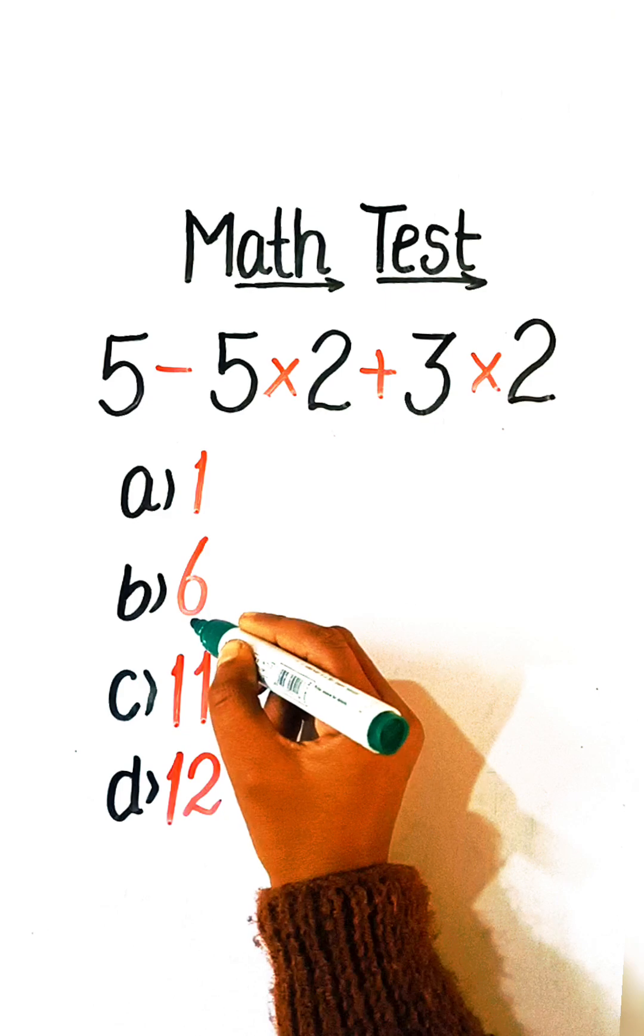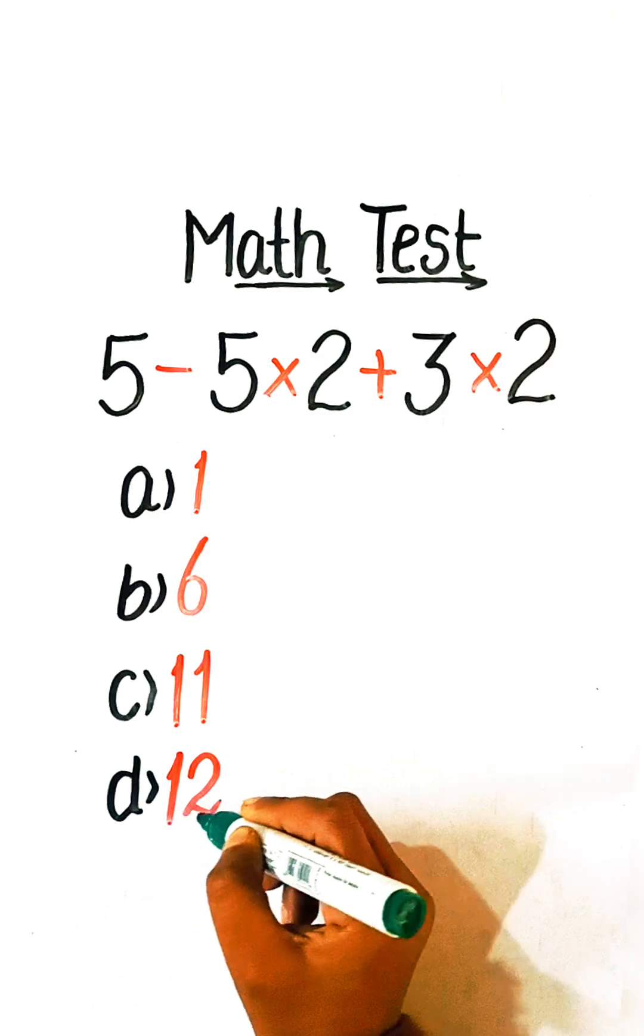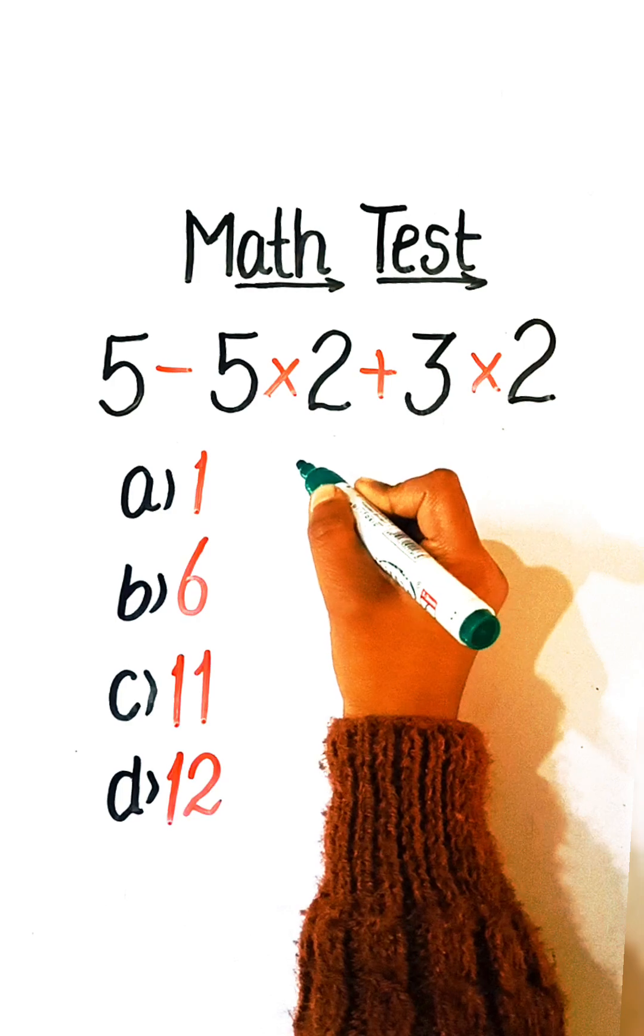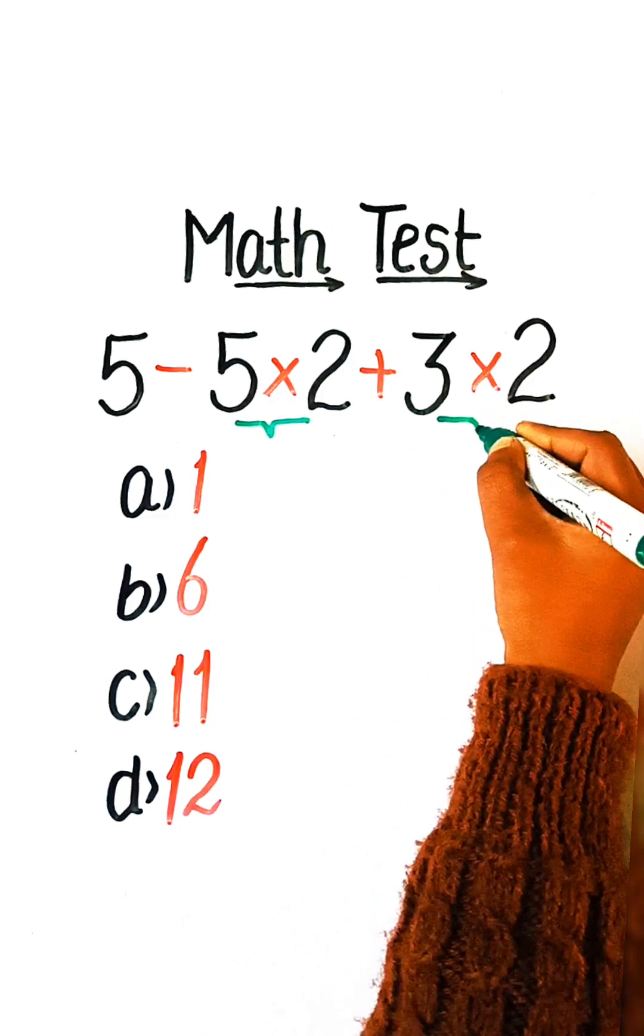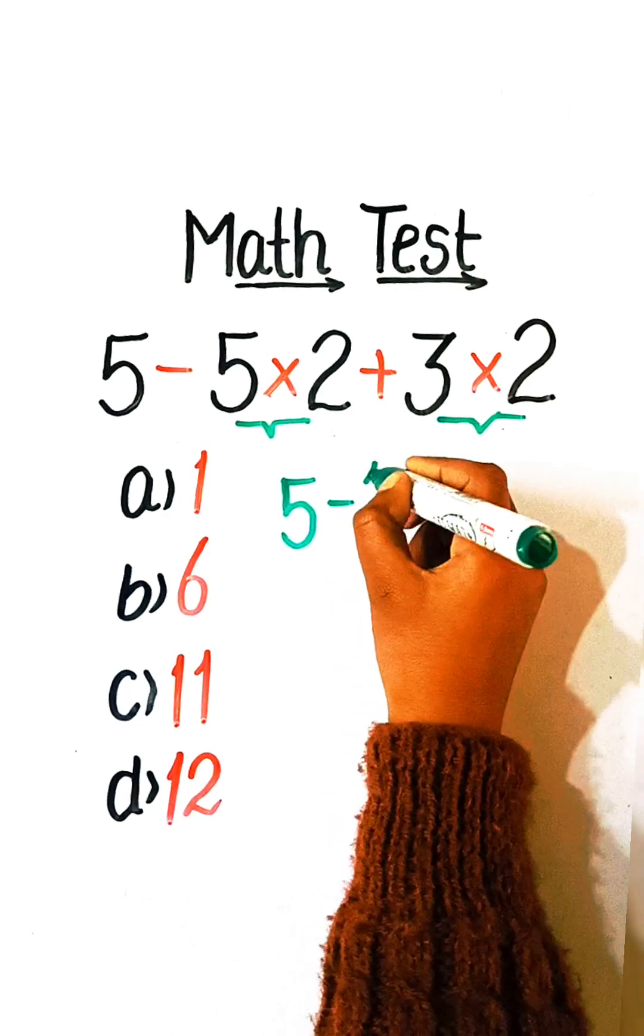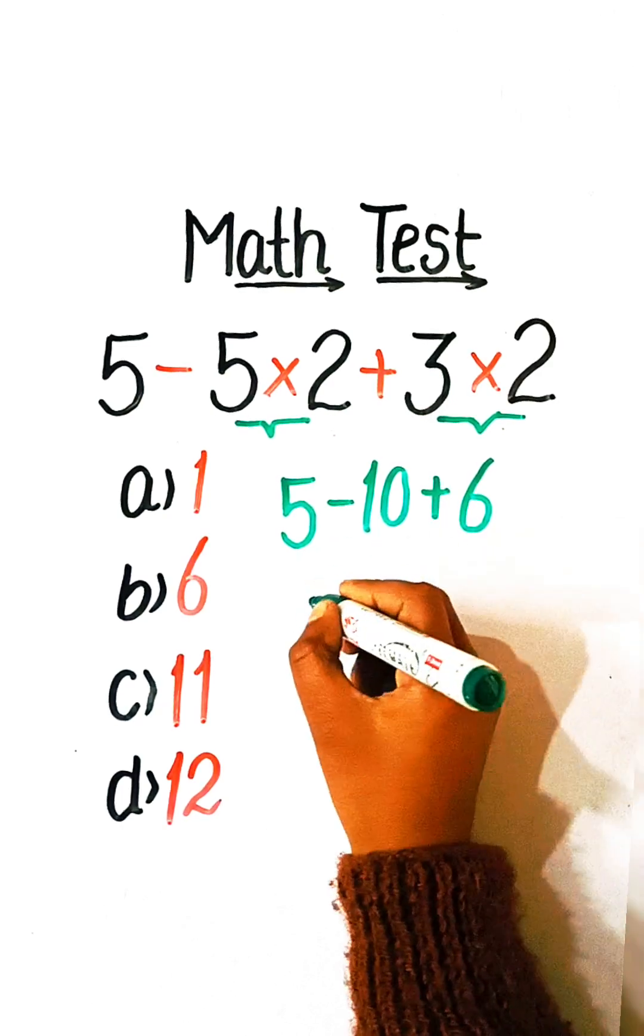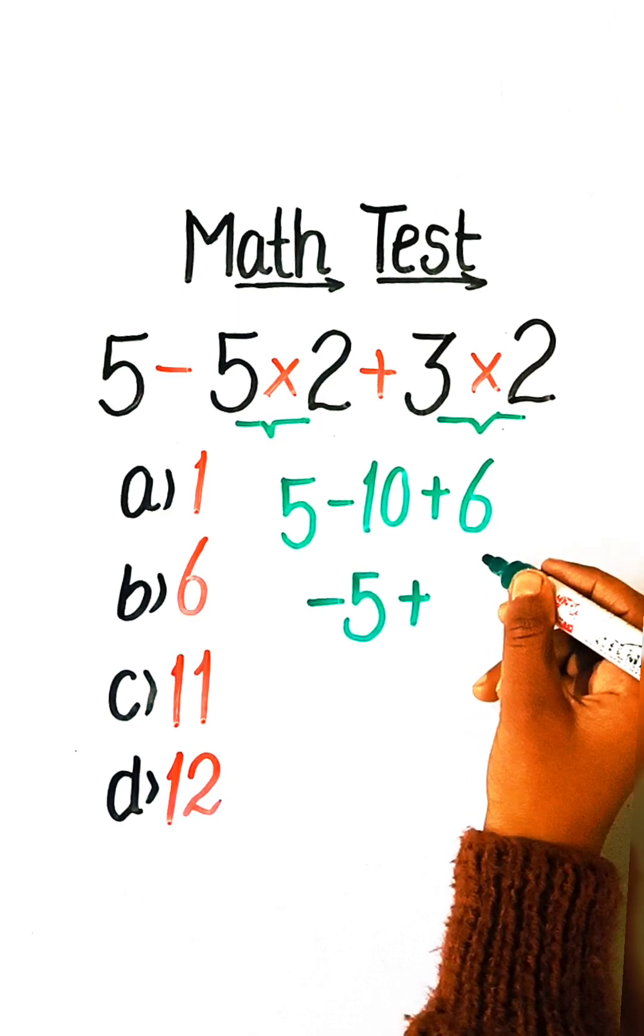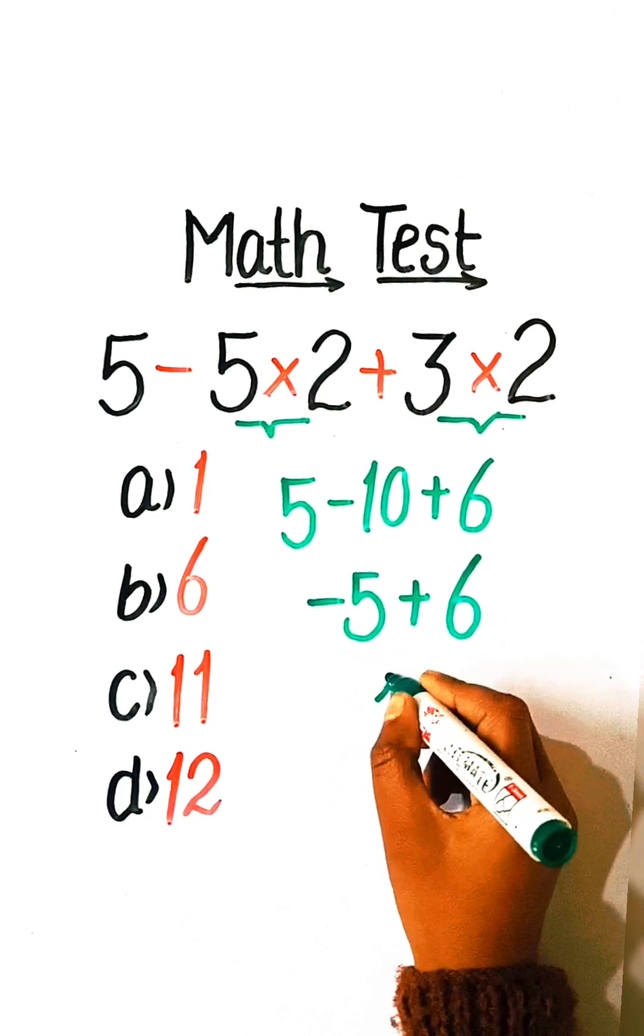Option B: 6, Option C: 11, Option D: 12. So let's solve this. We have to solve the multiplication part first, so we will write 5 minus 10 plus 6. 5 minus 10 is minus 5, plus 6 equals 1.